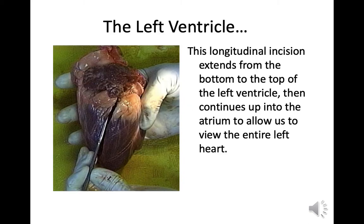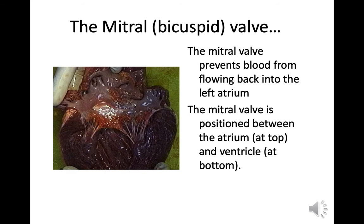The left ventricle: this longitudinal incision extends from the bottom to the top of the left ventricle, then continues up into the atrium to allow viewing of the entire left heart. The mitral bicuspid valve prevents blood from flowing back into the left atrium; it's positioned between the atrium at the top and the ventricle at the bottom.